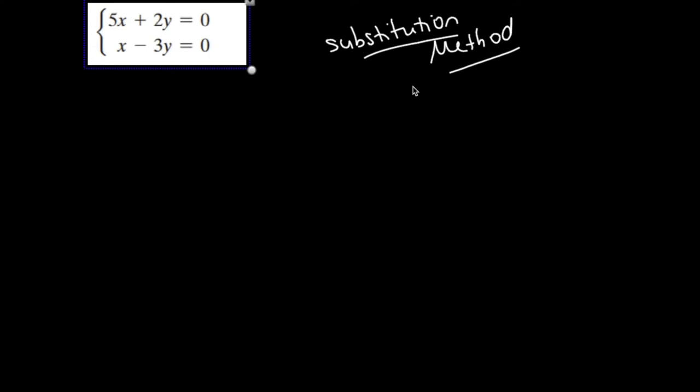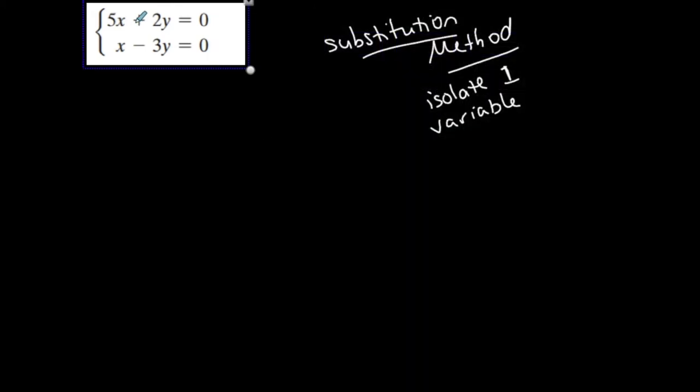Again, it's your preference after some point, but I'm going to use the substitution method to show you. You know that it's easier to use the substitution method when you can isolate one variable in either equation. So can I isolate one variable in either equation? I'm going to call this equation 1, and I'll call this equation 2.